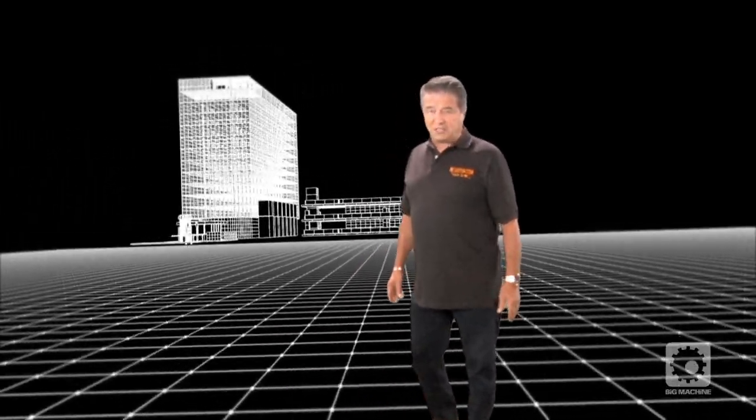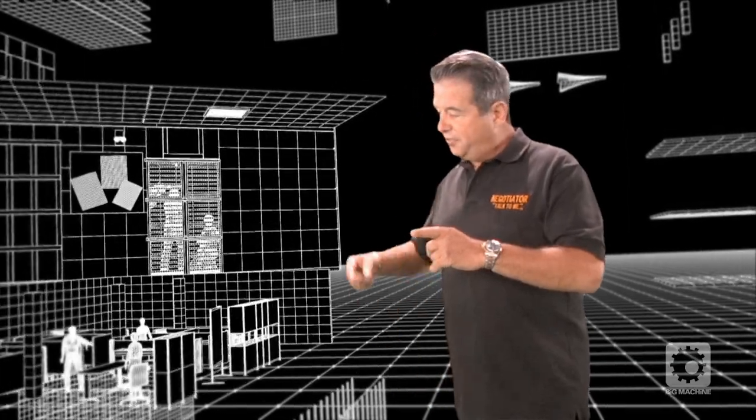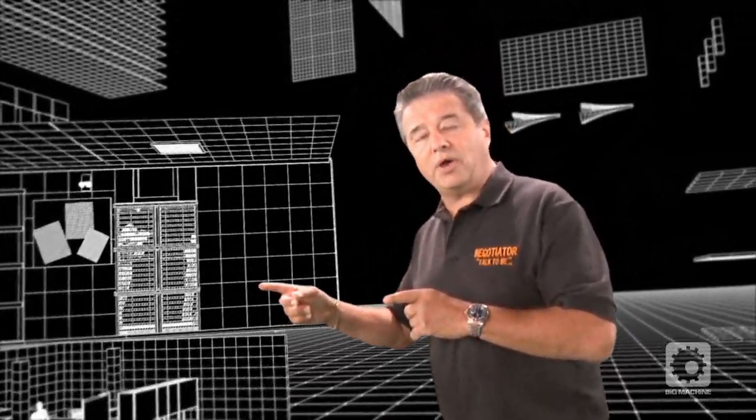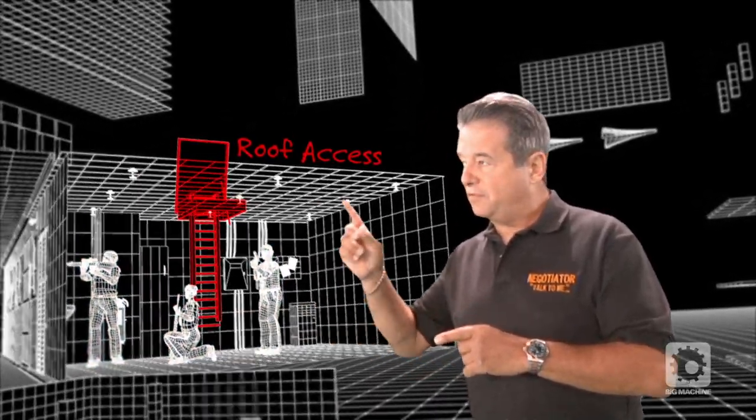After reviewing the blueprints, the SWAT team has discovered that on the 10th floor where the hostages are being held, there's a mechanical room just down the hallway, large enough to hold three shooters. It also has access from the roof.